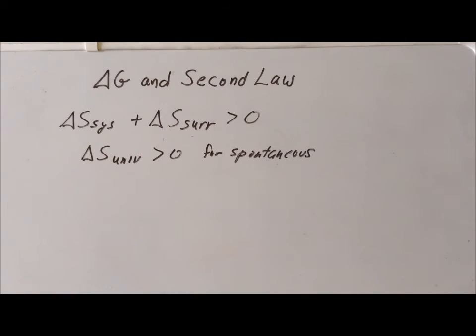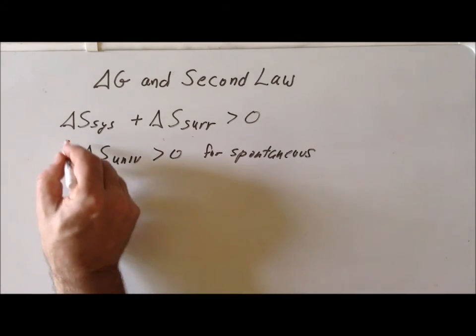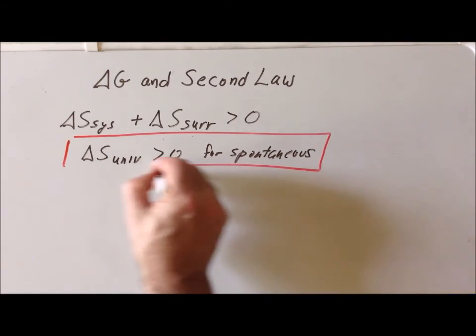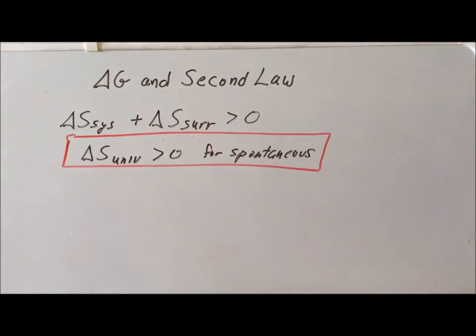What is this statement? It's nothing but the second law. So we see that the condition that delta G has to be less than zero for a spontaneous process is nothing more than a convenient restatement of the second law. I thank you very much for your attention.